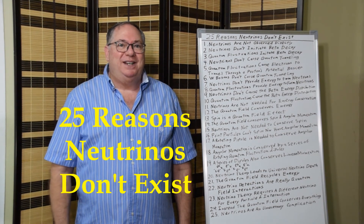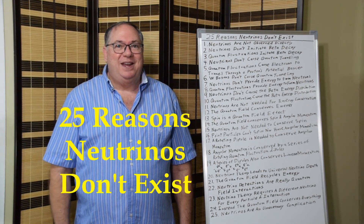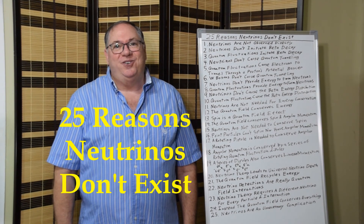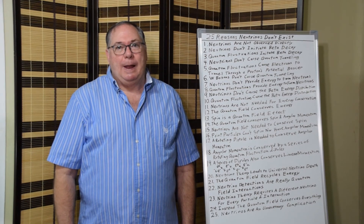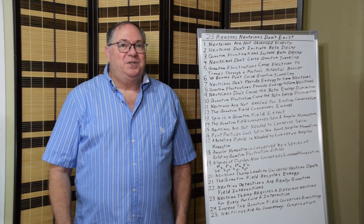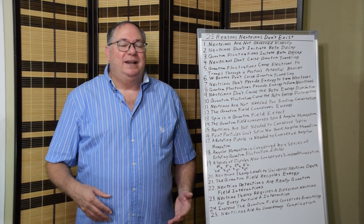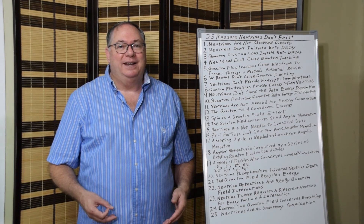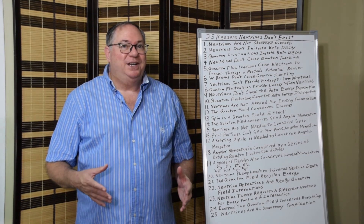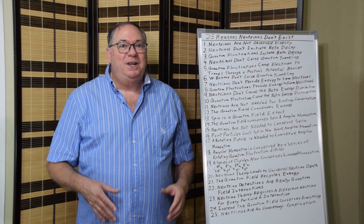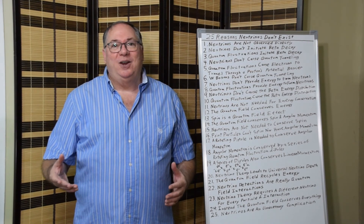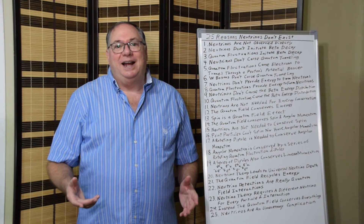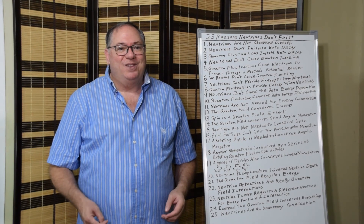Today I'm continuing my series on weak interactions with 25 Reasons Neutrinos Don't Exist. You may know the story that in the 30s, Wolfgang Pauli came up with the idea that in order to conserve energy in weak interactions, there must be little neutral things that carry away energy. Well, he skipped a lot, and so I'll go through the list.